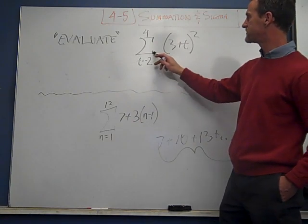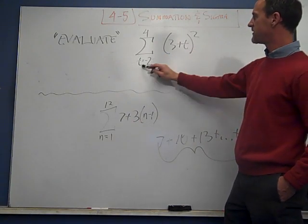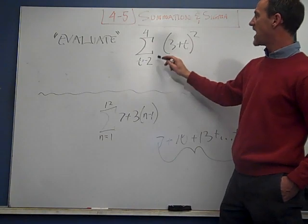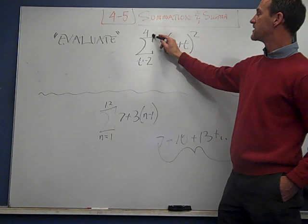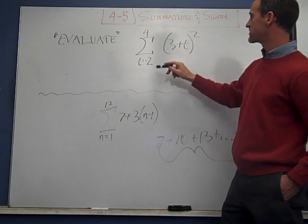Here it's starting at negative 2. So our first term, the value of t, is negative 2. We're adding up all the terms up until t is equal to 4. Okay, so that's going to be a total of 7 because there's a 0 term in there.